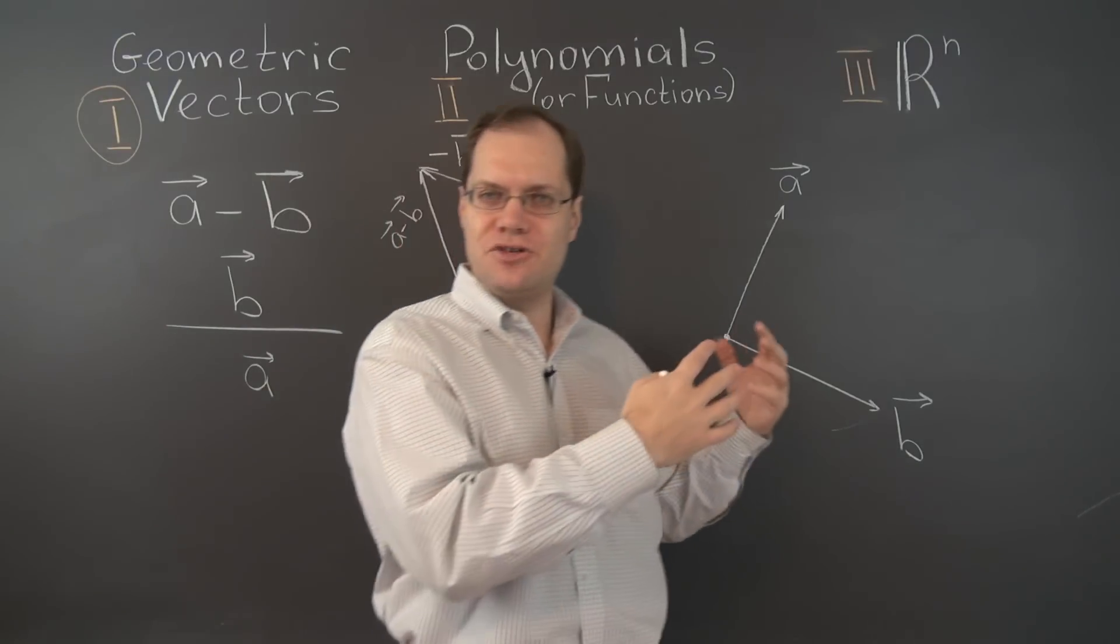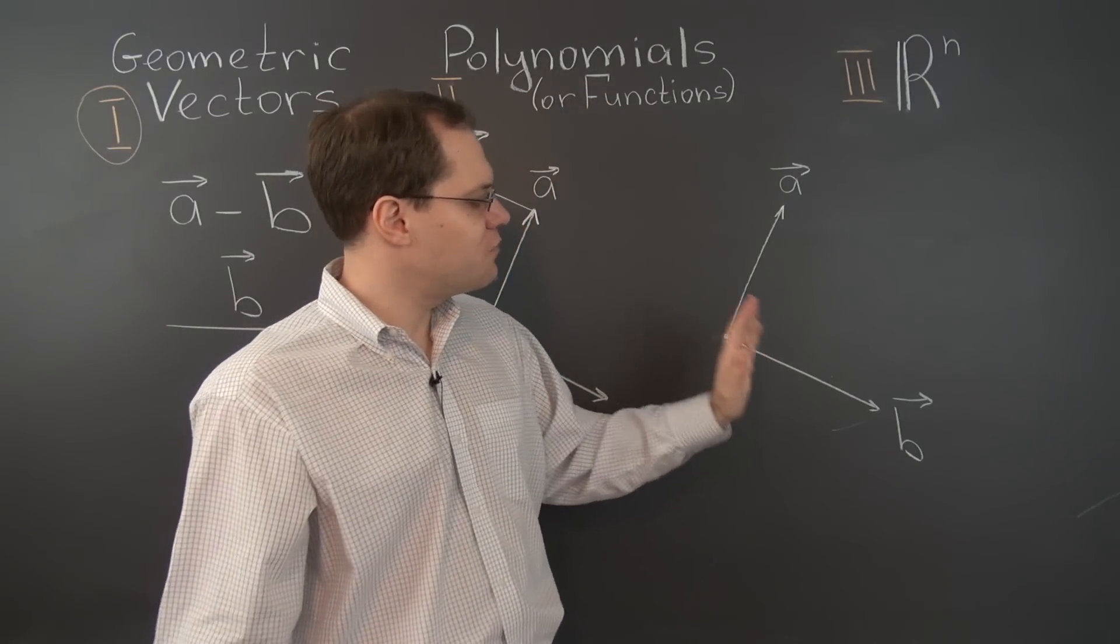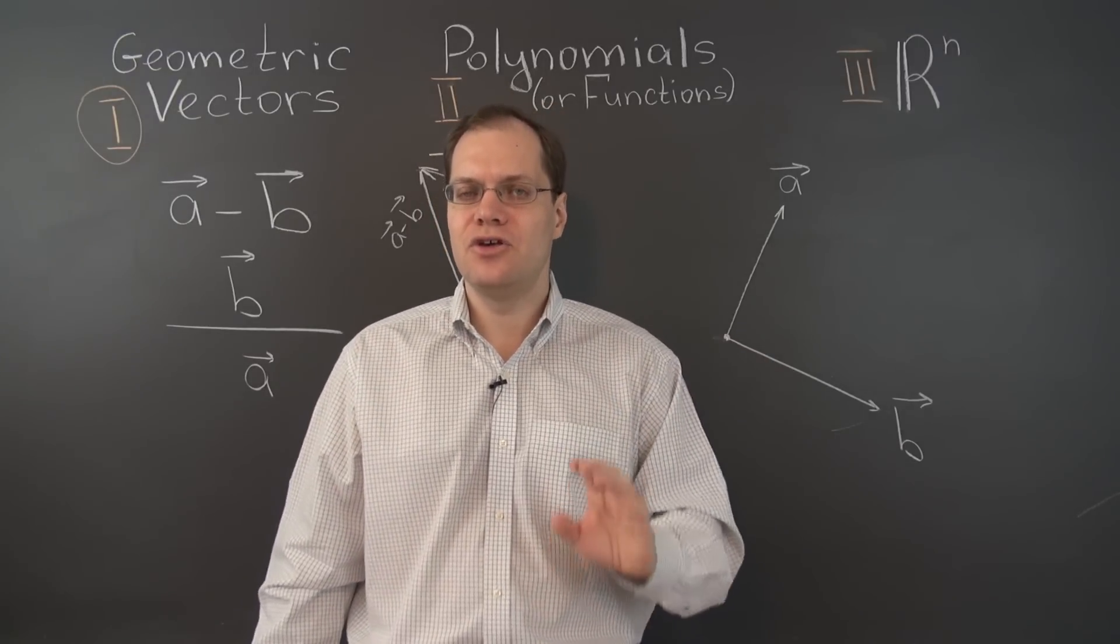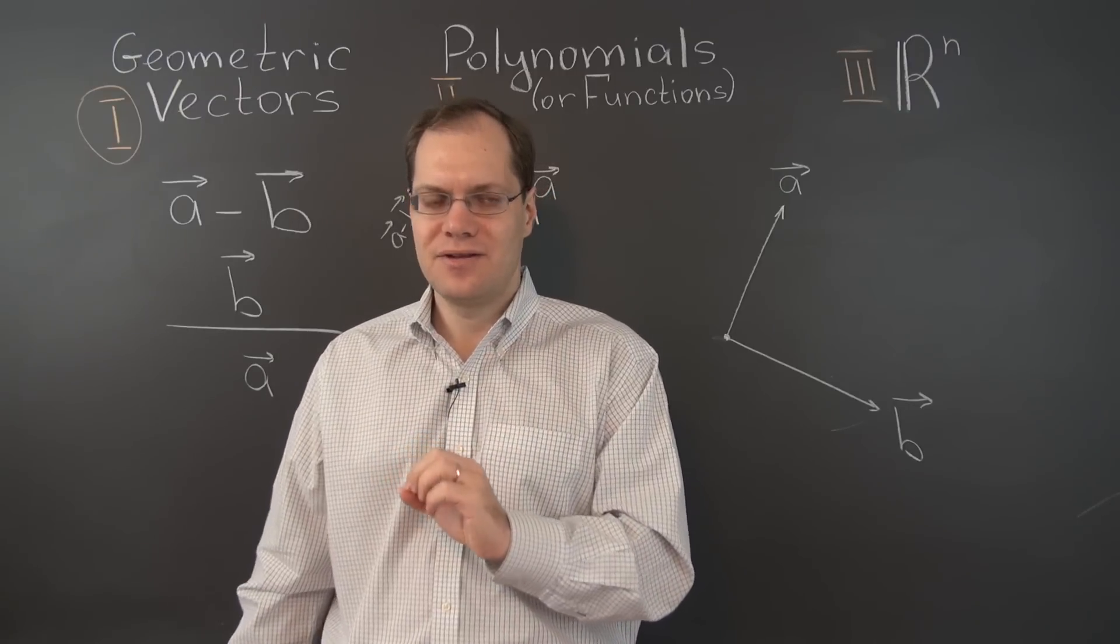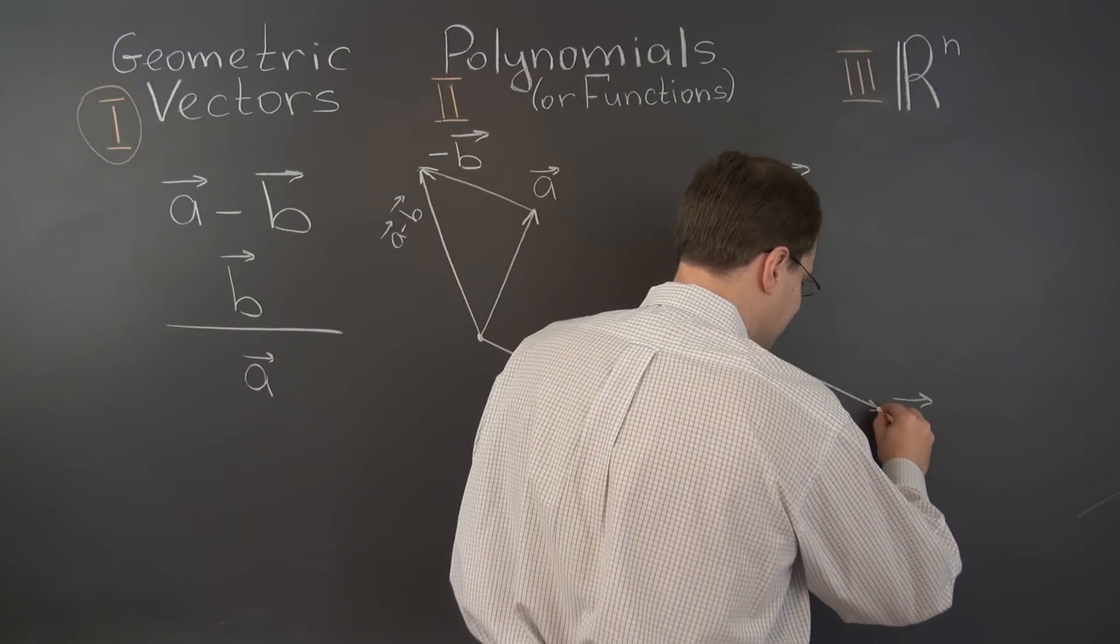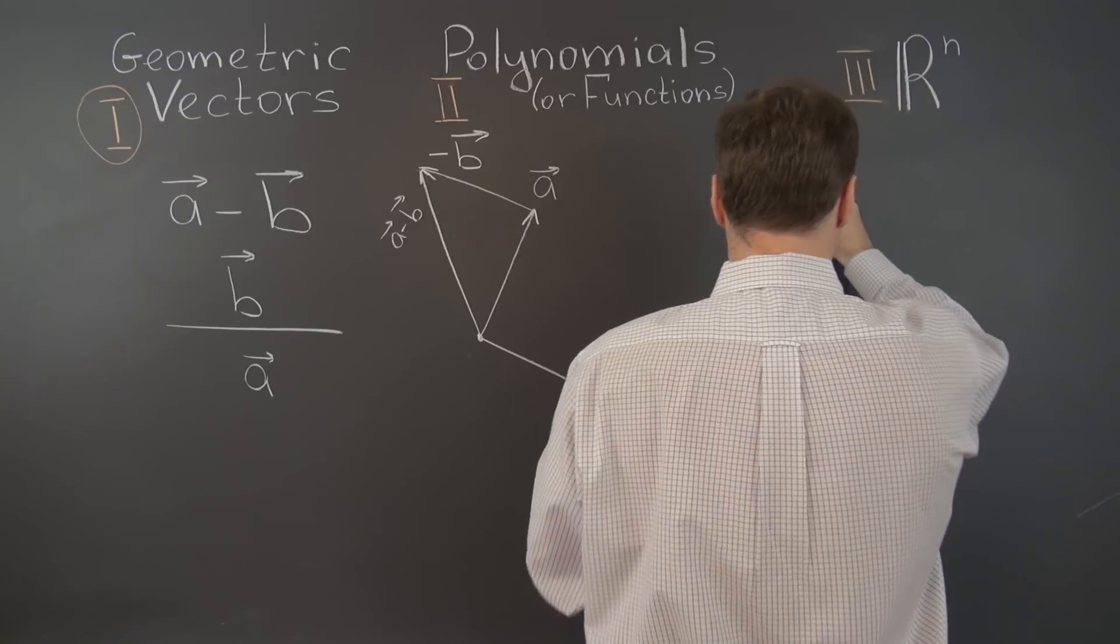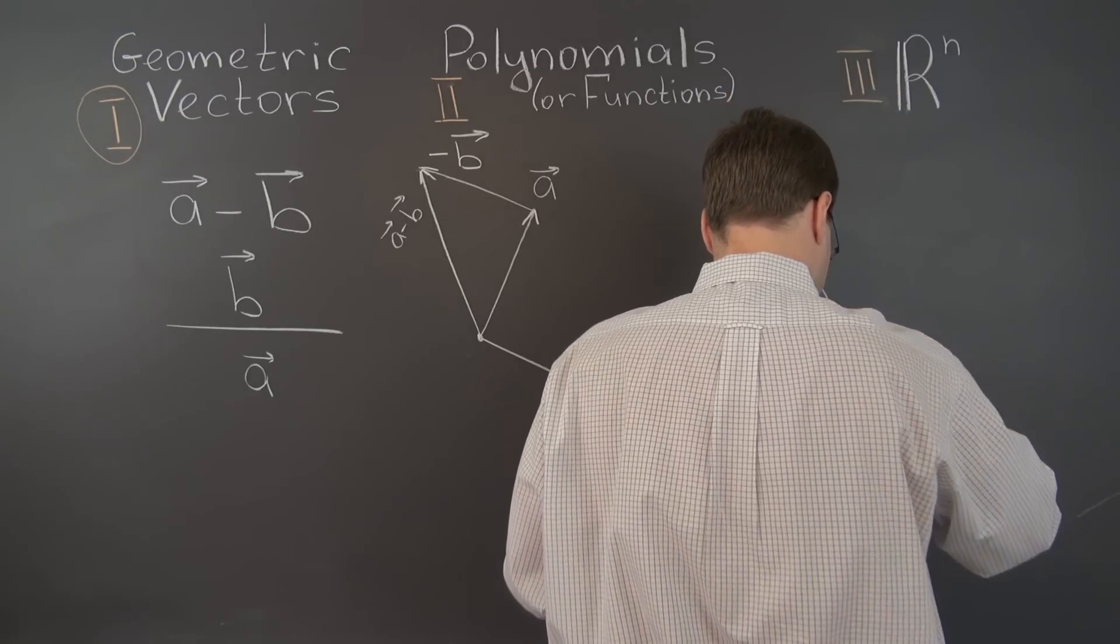So now going back to the geometric picture, we're looking for a vector such that if you were to add it to B, you get A. And of course, by the tip-to-tail rule, it has got to be this vector right here pointing this way.